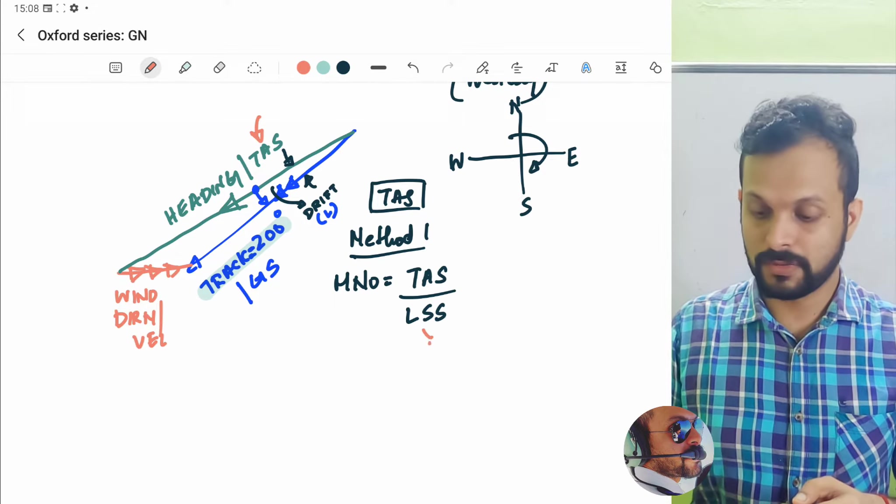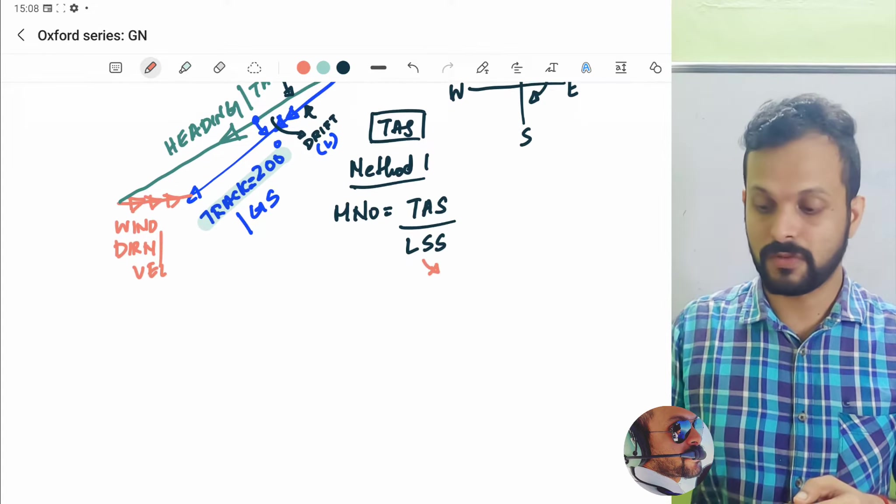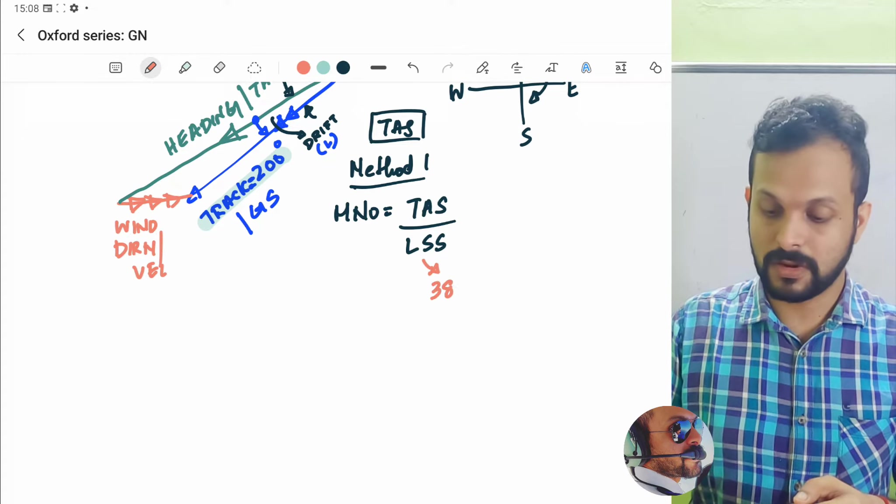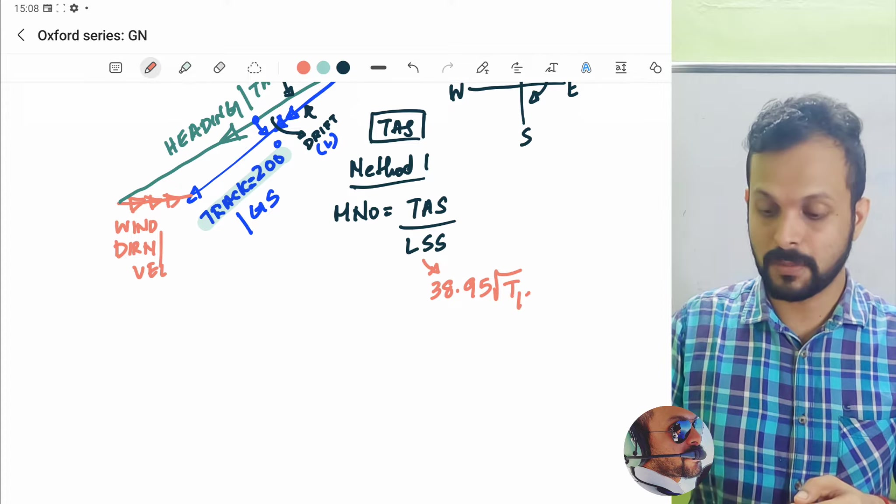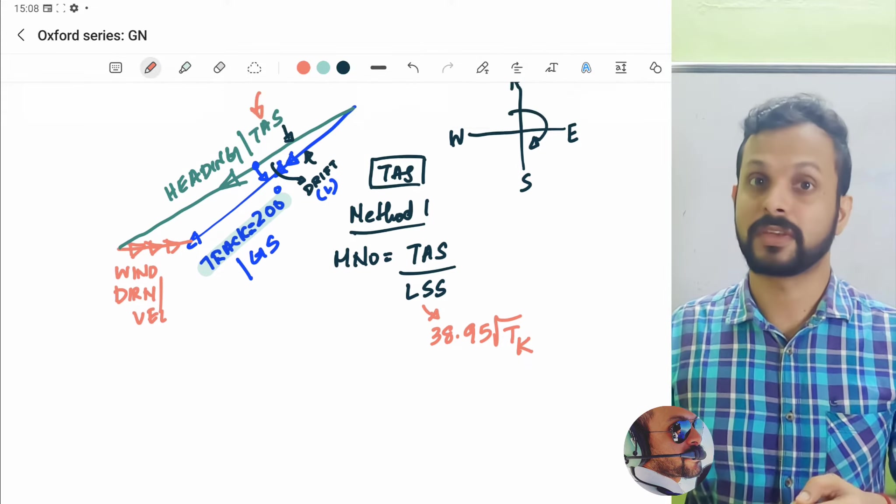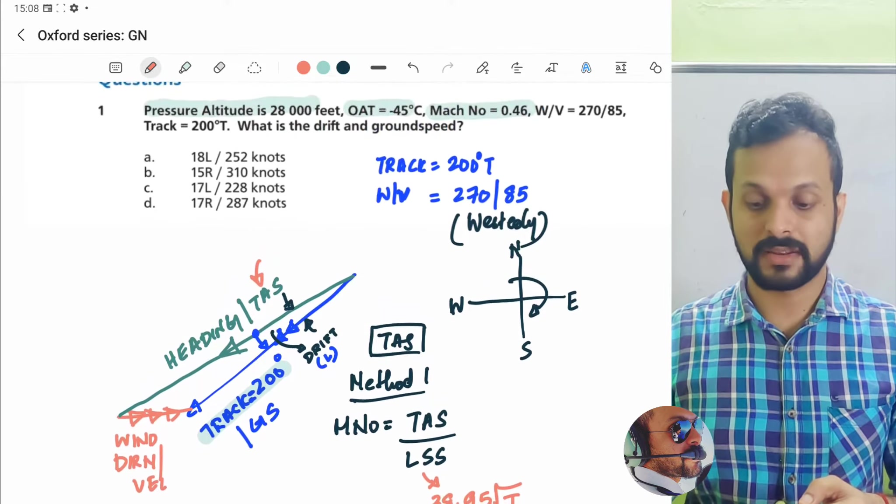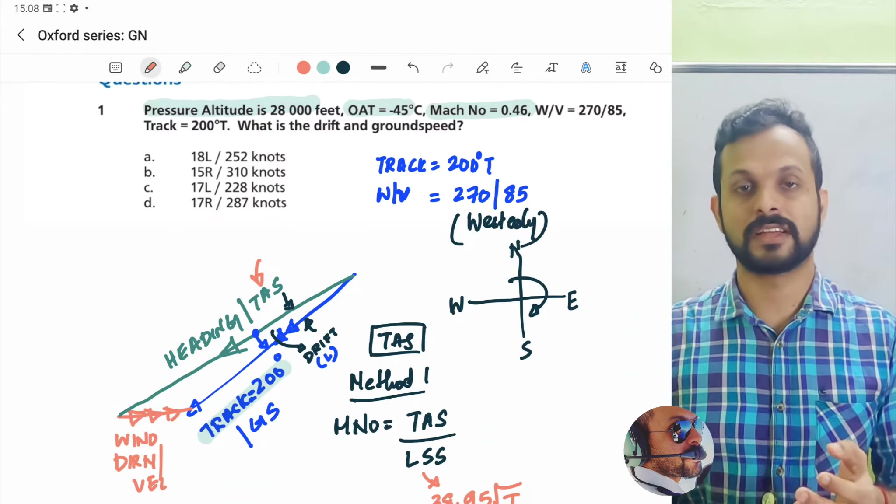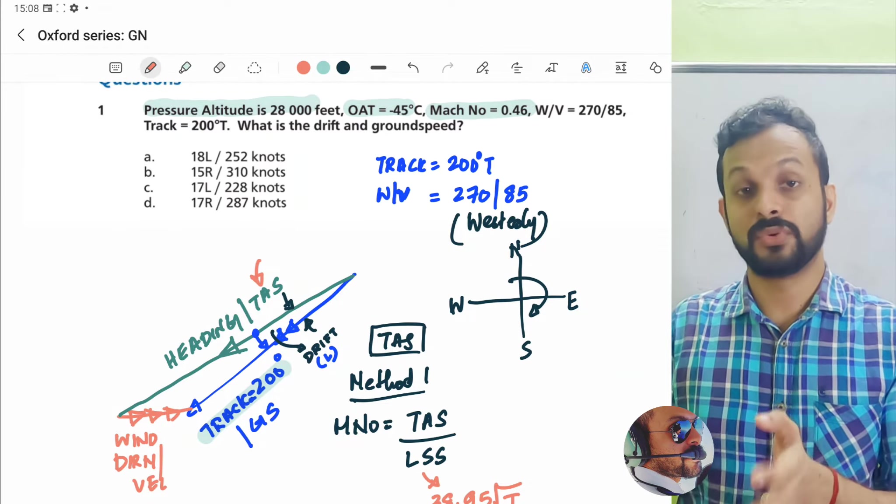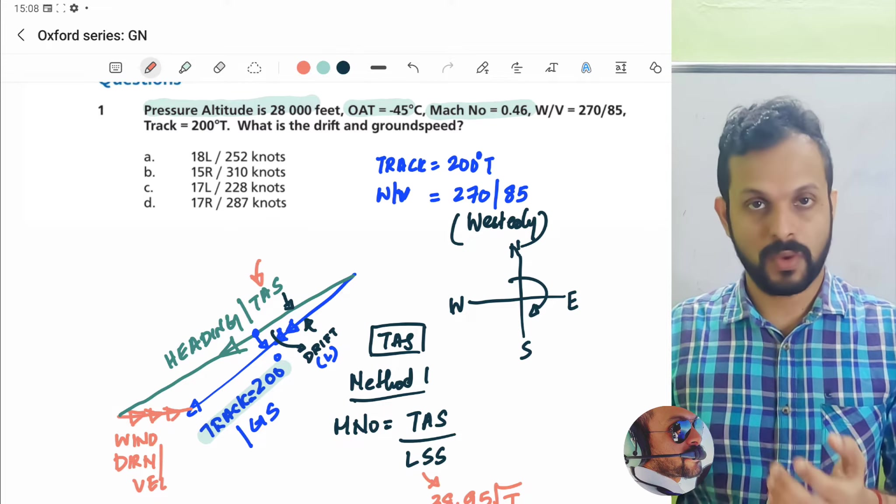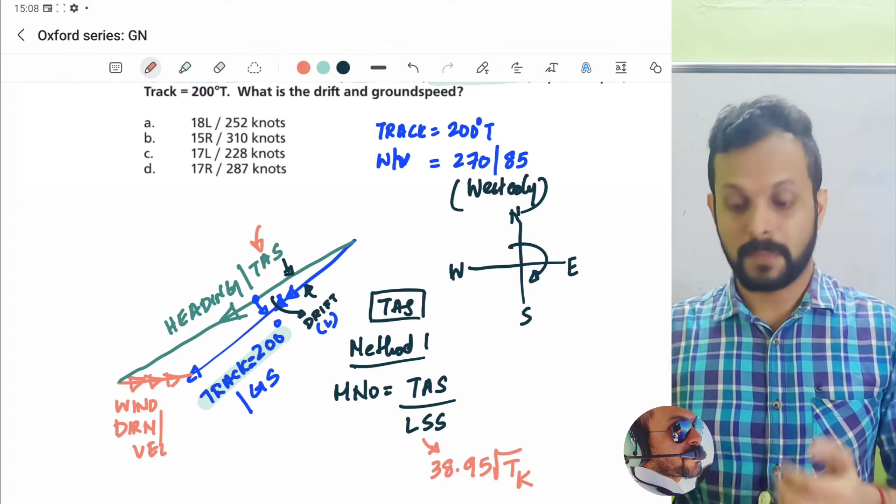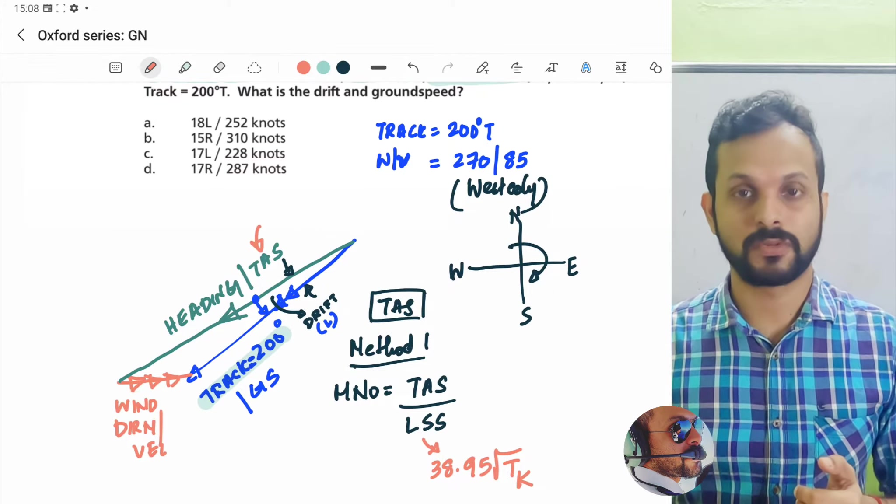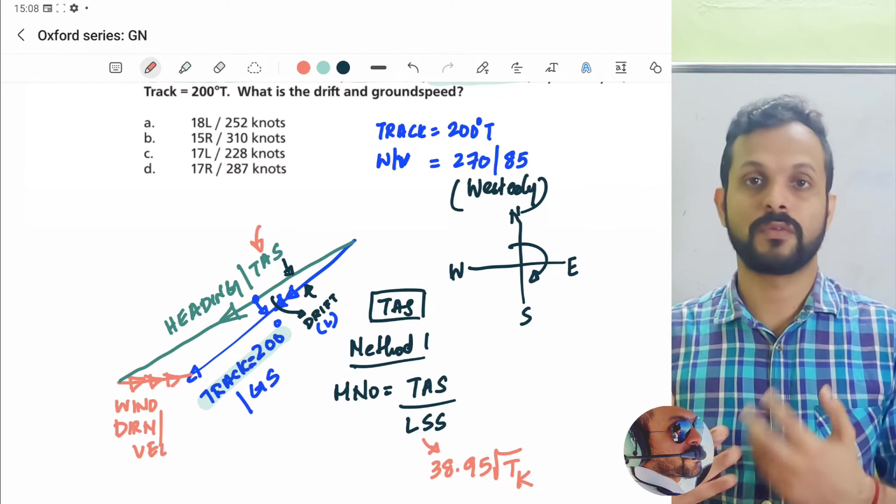And local speed of sound, we are aware of the equation which is 38.95 root of temperature, and remember the temperature is in Kelvin. So we have the outside air temperature given here as minus 45 degrees Celsius, convert that to Kelvin by adding 273 to it, find the square root, multiply with 38.95 and you will get the local speed of sound. Multiply that with the Mach number of 0.46 and you will get the TAS. This is one way of finding the TAS.